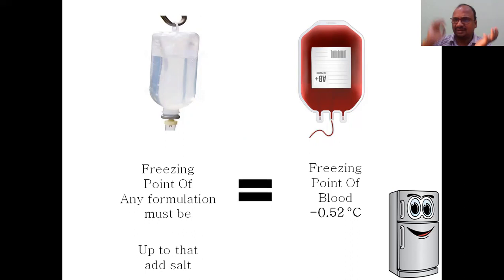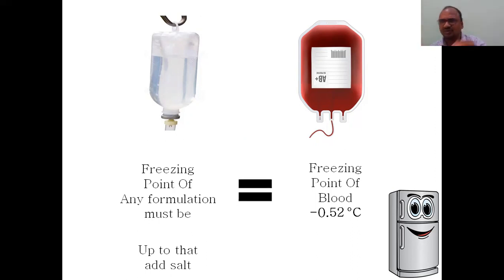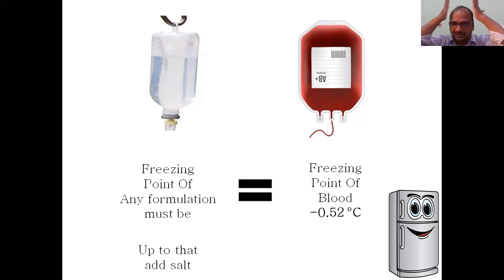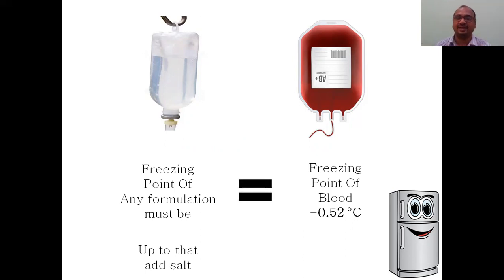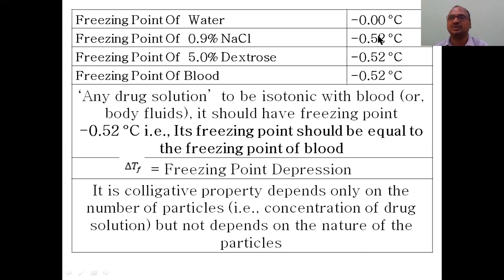Then you add salt and check it again. If it hasn't reached minus 0.52, you add more salt and check again — keep adding salt and checking until the freezing point of the formulation reaches minus 0.52 degrees centigrade. In olden days they added salt and checked repeatedly. Nowadays, simple calculations are used instead. The freezing point of water is 0.0°C; freezing point of 0.9% NaCl is minus 0.52°C.